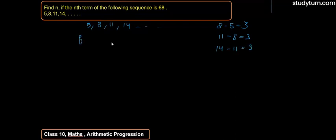So now we can see here the first term. The first term we have seen here, a here will be 5. The common difference, we can see here, is 3.